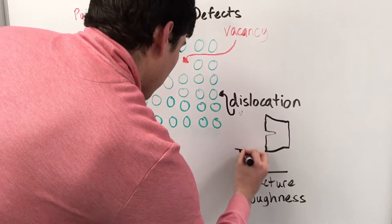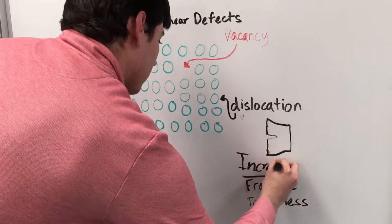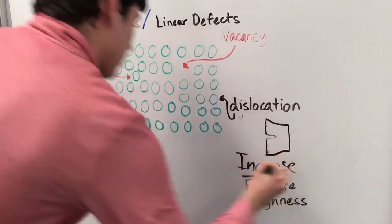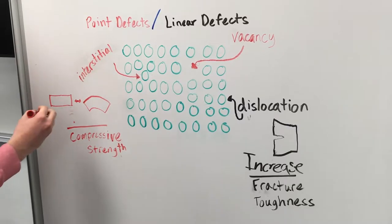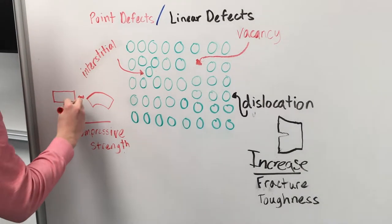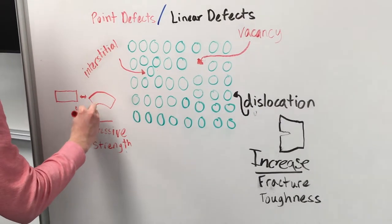Defects in titanium nitride can be useful depending on the application. Dislocations are responsible for fracture toughness of PVD coatings and they are able to impede the propagation of cracks. Point defects created by ion bombardment are the origin of high compressive stresses in sputtered coatings deposited at low pressures, leading to an increase in intrinsic stresses.